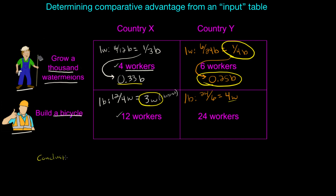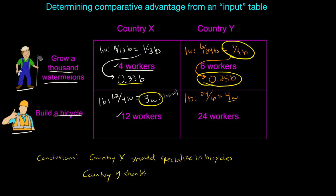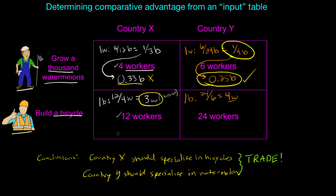Based on these calculations, Country X should specialize in the production of bicycles because it has the lower opportunity cost compared to Country Y. Country Y should specialize in the production of watermelons at a lower opportunity cost of 0.25 bicycles per watermelon. Through trade, both countries can enjoy the good they are not producing domestically at a lower opportunity cost than they could have produced it themselves.